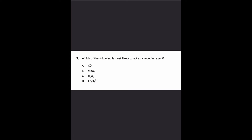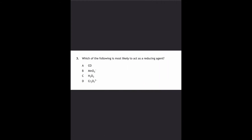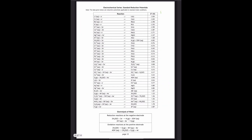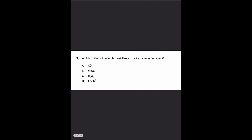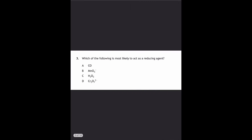Looking at some past paper questions: from the 2019 paper, it asks which of the following is most likely to act as a reducing agent. The options are permanganate, hydrogen peroxide, dichromate, and carbon monoxide. You're looking for the one highest up on the right-hand side. These three — permanganate, hydrogen peroxide, dichromate — are all at the bottom left, making them good oxidizing agents, not reducing agents. Because reducing agents must be on the right-hand side, carbon monoxide would be our best bet for that question.